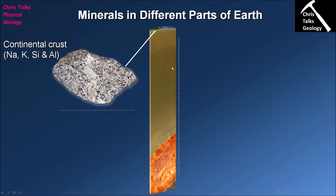So if we have a rock that's full of iron, that's obviously going to produce lots of iron minerals. The distinctive chemistry of each layer produces a mineral assemblage associated with that particular zone. The first area we're going to think about is the continental crust. This rock here is a piece of granite, which is by far and away the most common rock in the continental crust environment.